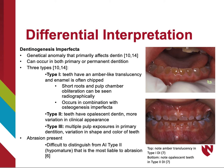Dentinogenesis imperfecta is a genetic anomaly that mainly affects dentin that can occur in both primary and permanent dentitions. There are three types. In type 1, teeth have an amber-like translucency and the enamel is often chipped. Radiographically, you may see short roots and pulp chamber obliteration. This type often occurs in combination with osteogenesis imperfecta. In type 2, teeth have opalescent dentin and have more clinical variation. In type 3, you may see multiple pulpal exposures in the primary dentition and large variation in the shape and color of teeth. When differentiating between AI and dentinogenesis imperfecta, the presence of abrasion may make it difficult because dentinogenesis imperfecta and type 2 AI may both show this finding.